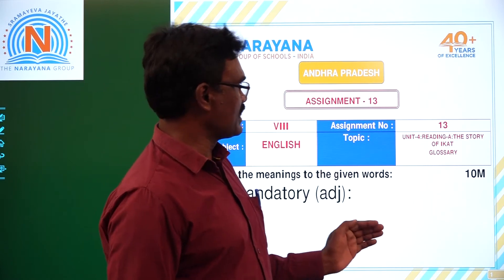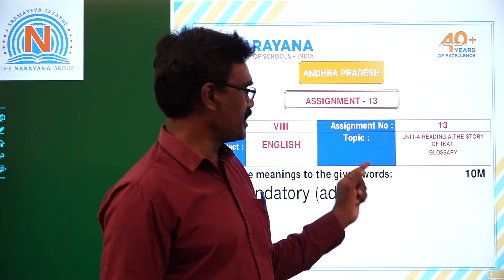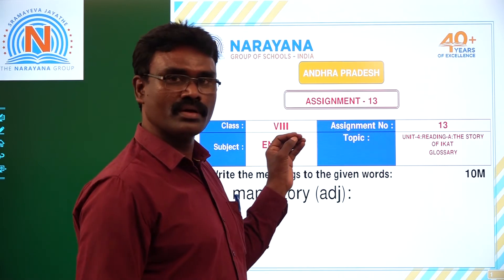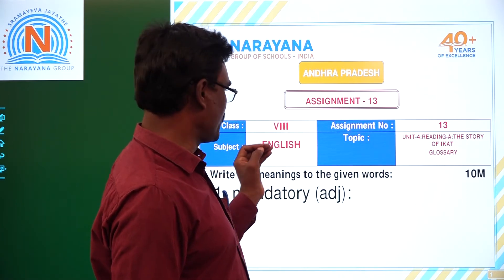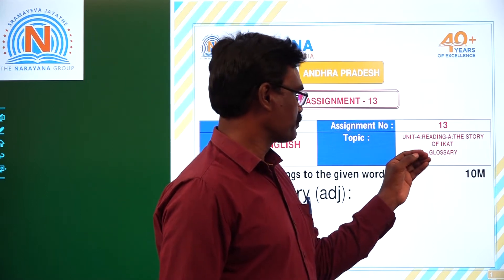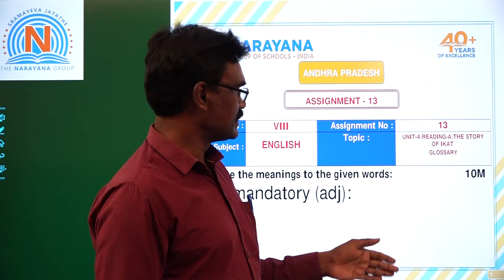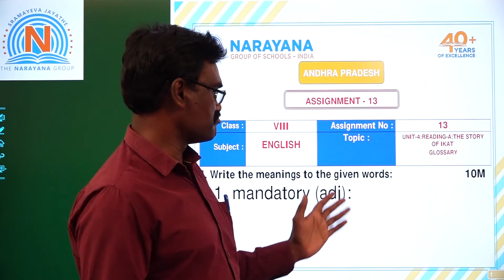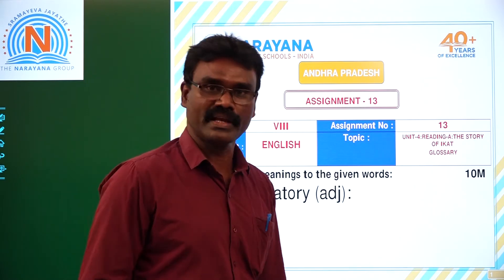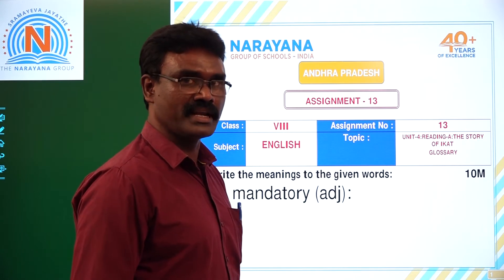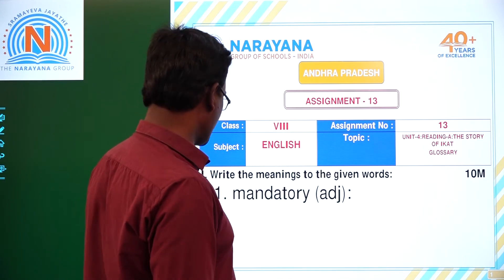Good morning children. Welcome to Narayana live classes. This is assignment number 13 of 8th class, subject English. The topic is Unit 4 reading A, the story of Ikat. Glossary meanings. Ten meanings are given. We have to write the meanings for given words, children.